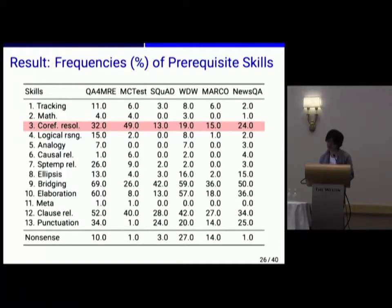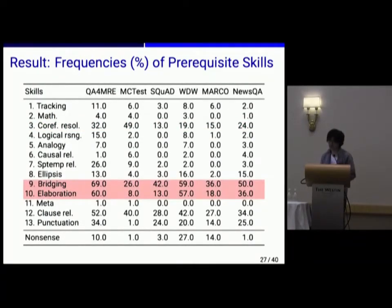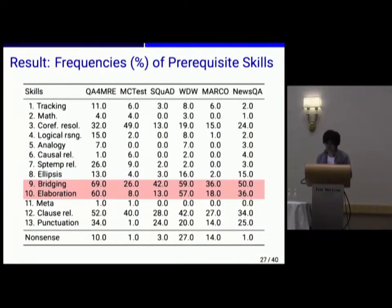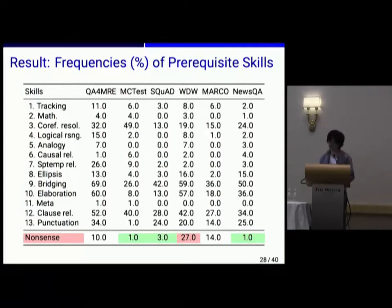Results also show differences among datasets in terms of knowledge reasoning — especially bridging and elaboration. For example, QA for MRE, whose questions are written by NLP experts, has the highest scores in knowledge reasoning. This seems to reflect the fact that QA for MRE has technical documents containing a wide range of knowledge. We also annotated nonsense questions, which are ambiguous or unanswerable ones. Results show the quality of questions — for example, 'who did what' questions are automatically generated and contain ambiguous questions.